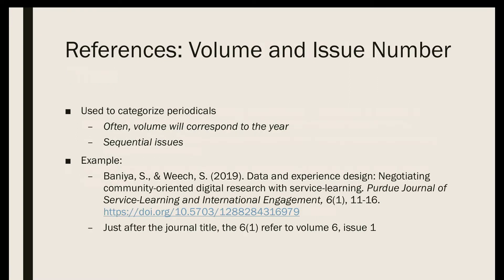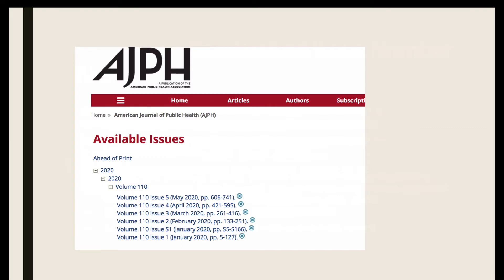Volume, issue number, and page numbers are almost always included in the references for scholarly journal articles. In general, the volume corresponds to the year, and then the issues that are published are numbered sequentially. So a periodical that publishes one issue per month will have 12 issues per year. If we look at the American Journal of Public Health, a journal that is published monthly, we see that the volume for 2020 is volume 110.